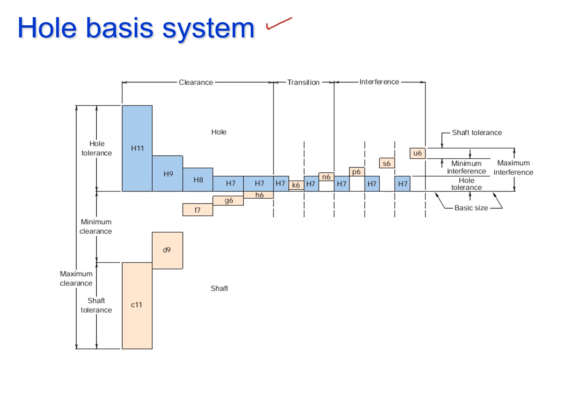This diagram shows the hole basis system. All the blue columns are designated with a capital letter H and their size is not changing. The pink color is used for the shaft tolerance, which is changing because this is a basic hole system. For the hole tolerance, only capital H is used. For shaft tolerance, the alphabets change: C, D, F, G, H, K, N, P, S, U. Their sizing changes because in the whole basis system the hole tolerance is constant and the shaft tolerance varies.